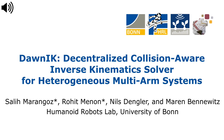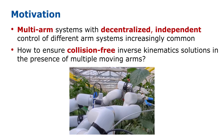In this video, we demonstrate the capabilities of our Collision-Aware Inverse Kinematics Solver, Don IK. Multi-arm systems with decentralized independent control of different arms, like the 3-arm harvesting robot HOTI-BOT shown in the figure, are being increasingly deployed. This leads to challenges in finding collision-free inverse kinematics solutions in the presence of multiple moving arms. Hence we propose Don IK, a decentralized approach to finding collision-free inverse kinematics for single or multiple arms.